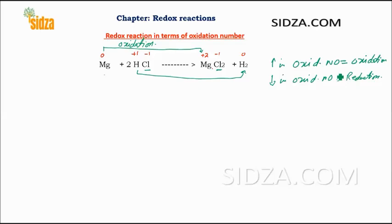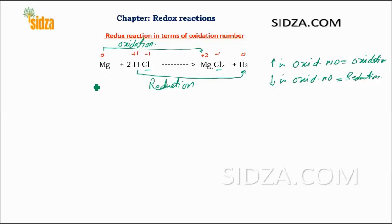Magnesium undergoes oxidation, and hydrogen changes its oxidation number from plus one to zero, so it is a decrease — hydrogen undergoes reduction. The substance which undergoes oxidation is called a reducing agent, so magnesium here is a reducing agent.